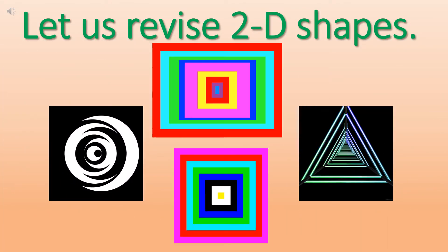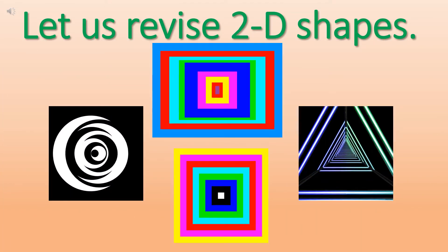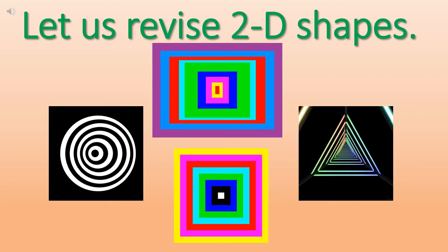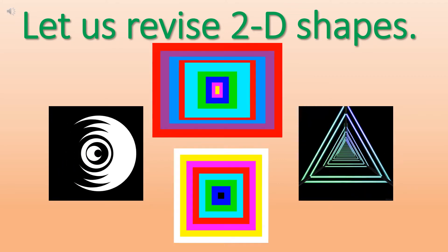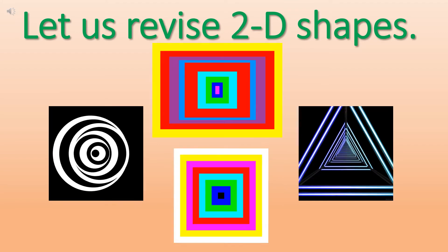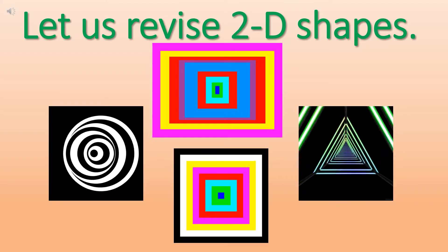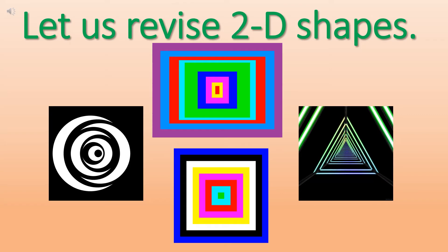Let us revise 2D shapes. Do you remember what are 2D shapes? Can you name them? Yes. Rectangle, square, circle and triangle are 2D shapes.